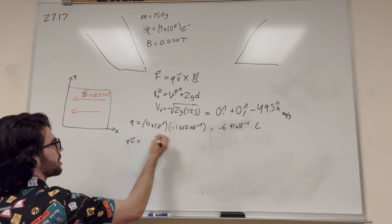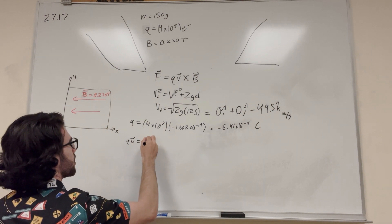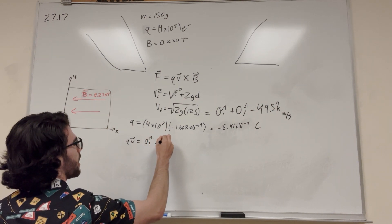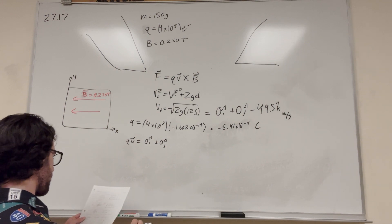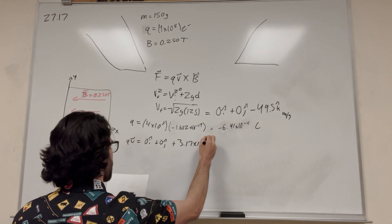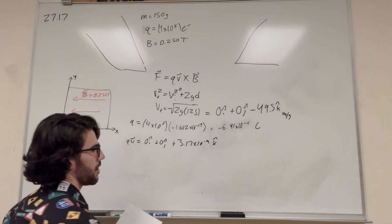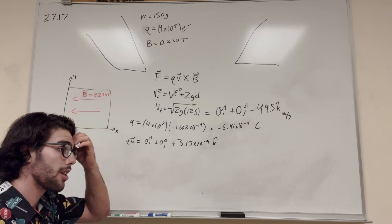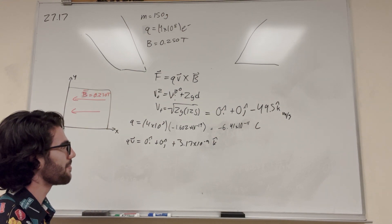So then we're going to multiply Q by V just to get this whole thing by itself. So then QV, that's just going to be this number multiplied. So it'll be 0i plus 0j. And then a negative times a negative is going to give us a positive 3.17 times 10 to the negative 9k. And this is going to be coulomb meters per second.